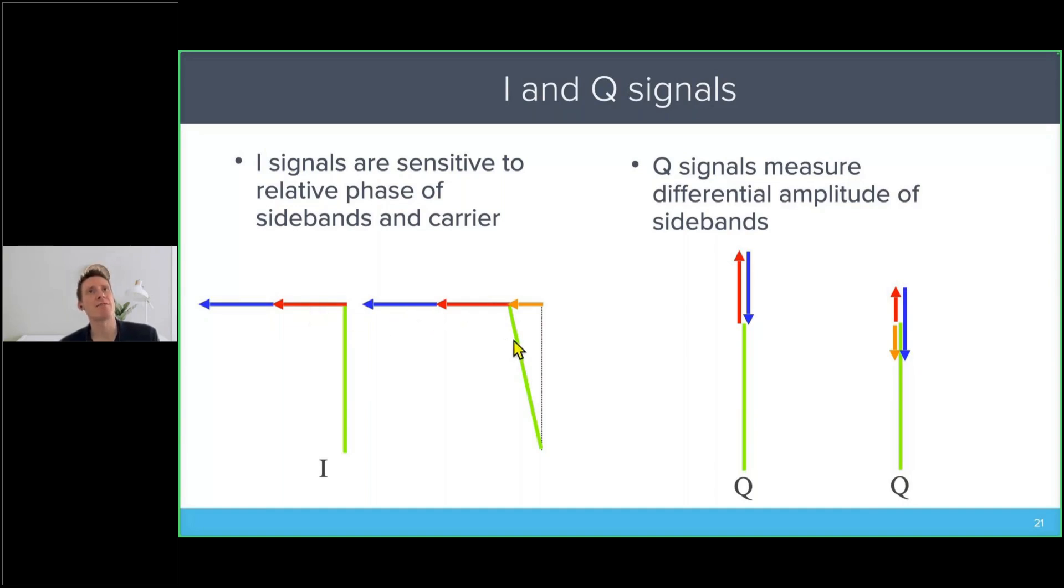However, if the carrier phase changes—remember phase was a rotation in the complex plane—then the dot product of the green with the red plus the blue exists. So we can detect phase changes of the carrier.